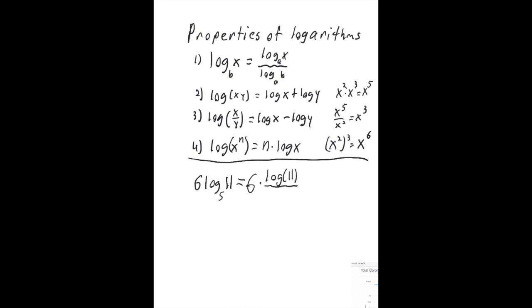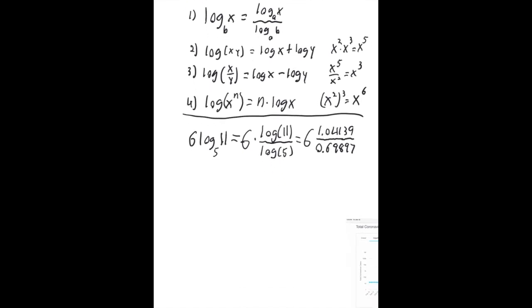And the change of base formula would say that log base 5 of 11 will be the same as log of 11 divided by log of 5. I'm not writing in the base. When you don't write in the base, we're assuming that means base 10. Then you could go ahead and do this on your calculator. Log of 11 is 1.04139. We'll go out to several decimal places to avoid any rounding errors as we finish the calculation. And log of 5 is 0.69897.